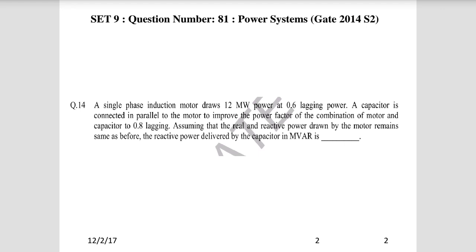First question: a single phase induction motor draws 12 megawatt power at 0.6 lagging power factor. A capacitor is connected in parallel to the motor to improve the power factor of the combination of motor and capacitor to 0.8 lagging, assuming that the real and reactive power drawn by the motor remains the same as before. The reactive power delivered by the capacitor in megawatt is?